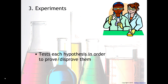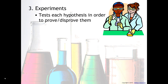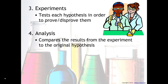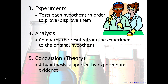Experiments are up next. We test each hypothesis in order to prove or disprove them. Then as we go through our experiments we have to analyze our results — this is where we compare the results from the experiment to the original hypothesis. Finally is our conclusion or our theory, which is a hypothesis that is supported by our experimental evidence.